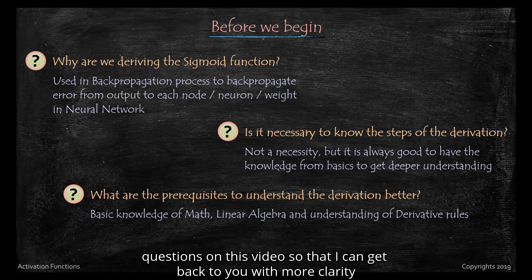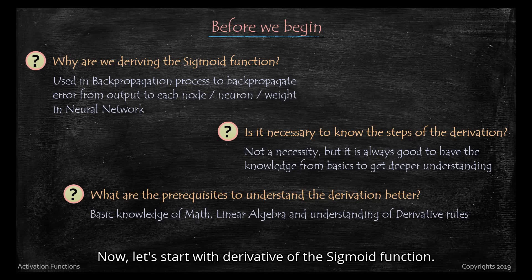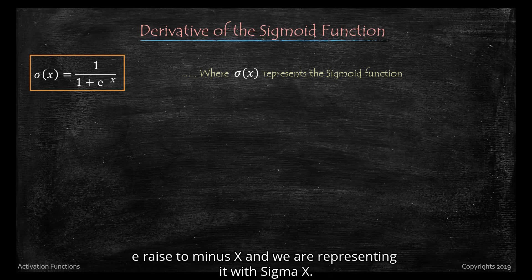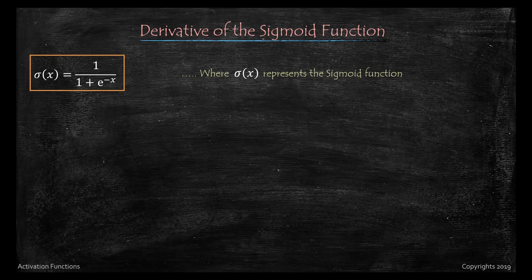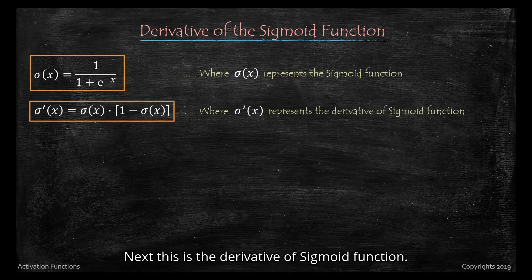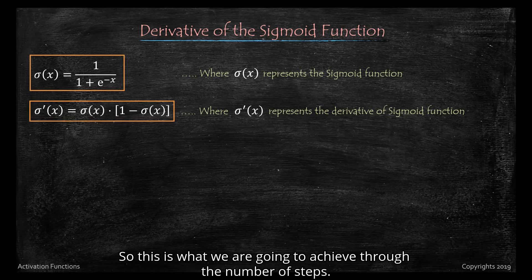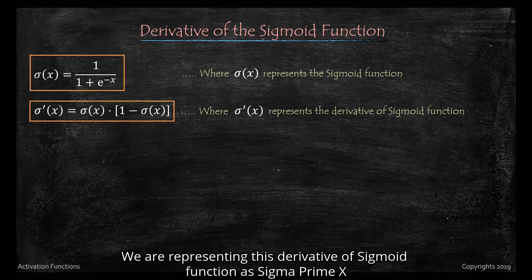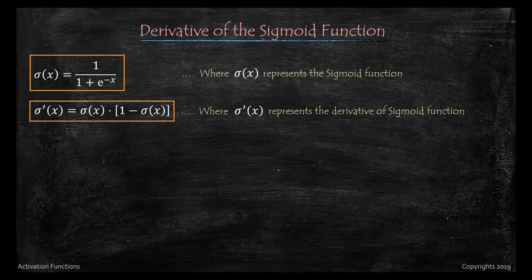Now let's start with the derivative of the sigmoid function. The sigmoid function is written as 1 over 1 plus e raised to minus x, and we represent it as sigma(x). The derivative of the sigmoid function — which is what we are going to achieve through a number of steps — is sigma(x) multiplied by 1 minus sigma(x). We represent this derivative as sigma prime(x).